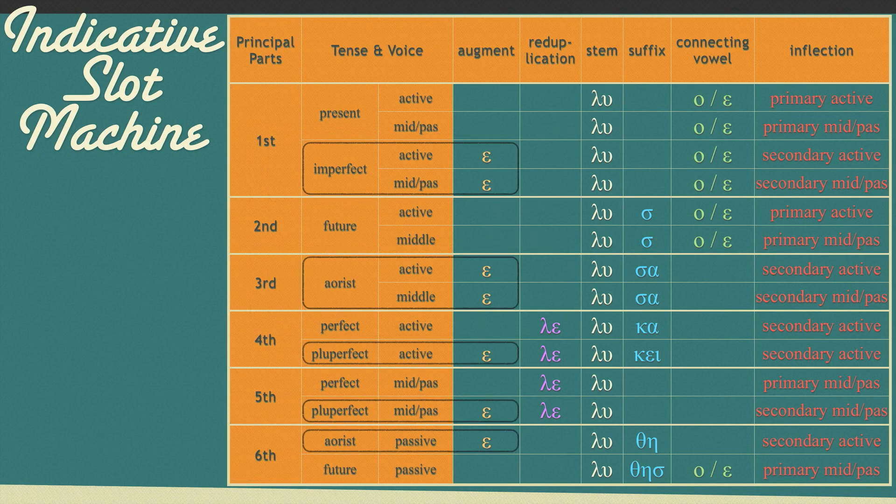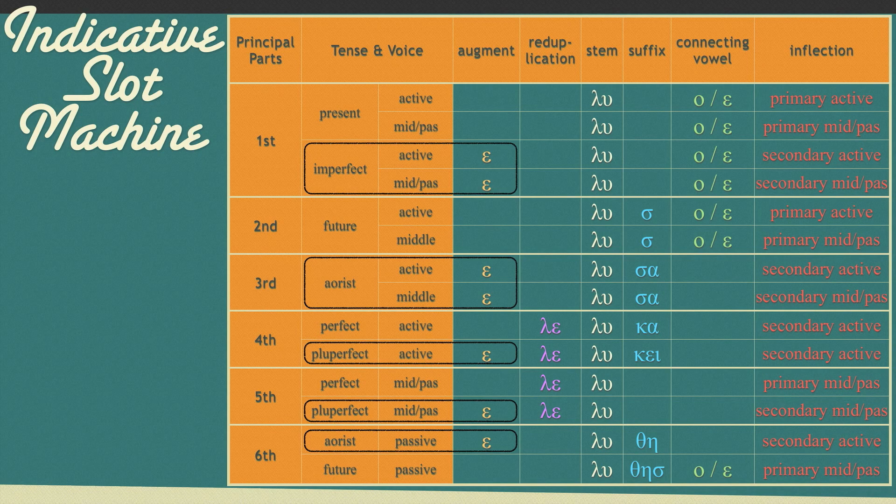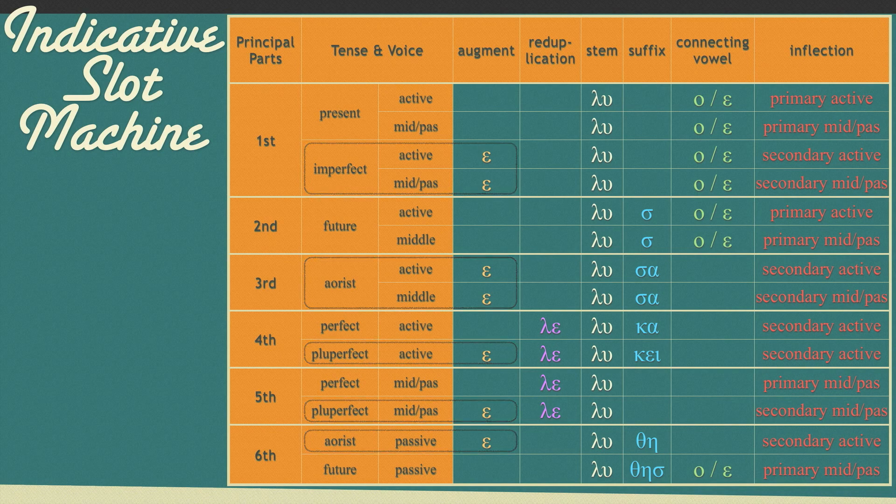So, as you see, only imperfects, aorists, and pluperfects have slot 1, the augment, attached to the beginning of the word. And you should know by now that if a verb begins with a vowel, this epsilon will contract with it. We don't have this problem with trusty Lua.